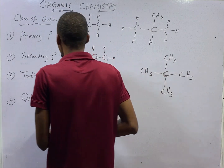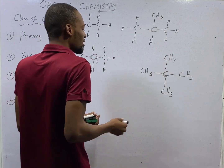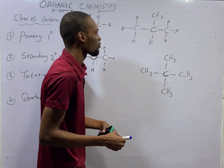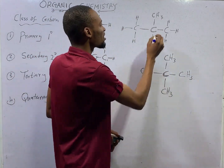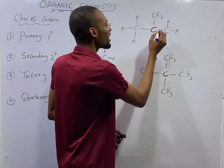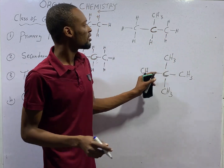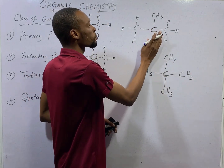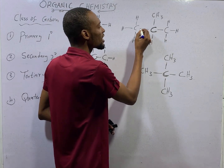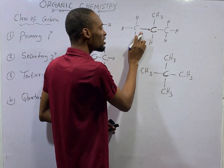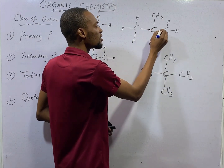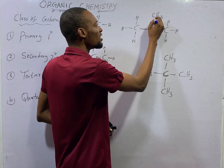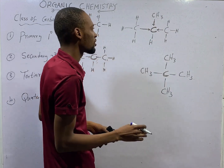What is tertiary carbon? Tertiary carbon is simply a carbon atom that has three other carbons directly linked to it. In this example, this carbon is directly linked to it, this one is directly linked to it, and this one here is also directly linked to it — giving us three connections, making it a tertiary carbon.